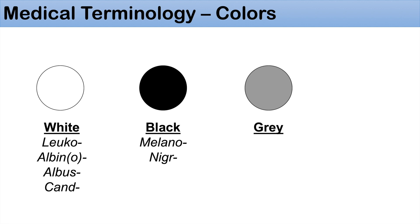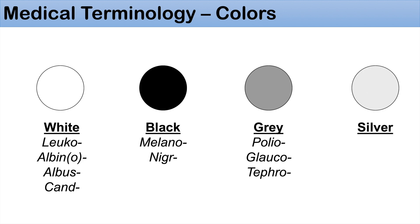Gray is denoted by the prefix polio, and also glauco — you can think of glaucoma. Another prefix for gray is tephro. And for silver, it is denoted by the prefix argend.